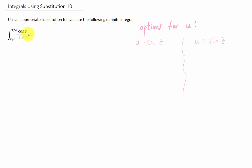Looking at this integral, we probably only have a couple of options for u. One would be cosine of z, and the other would be sine of z.